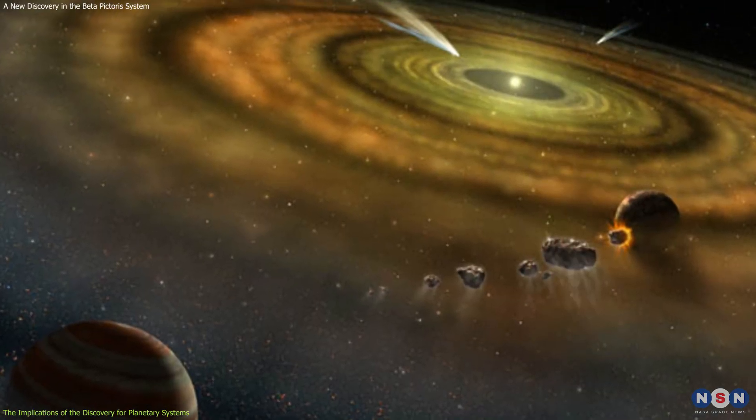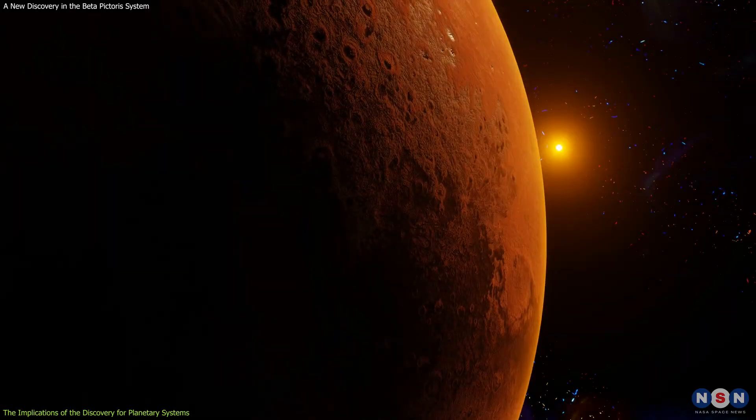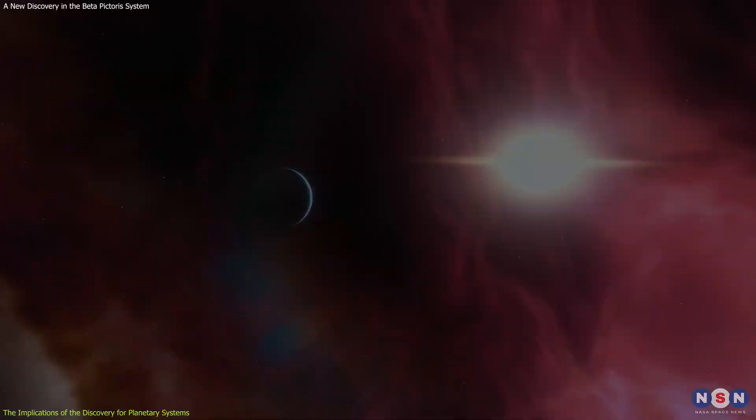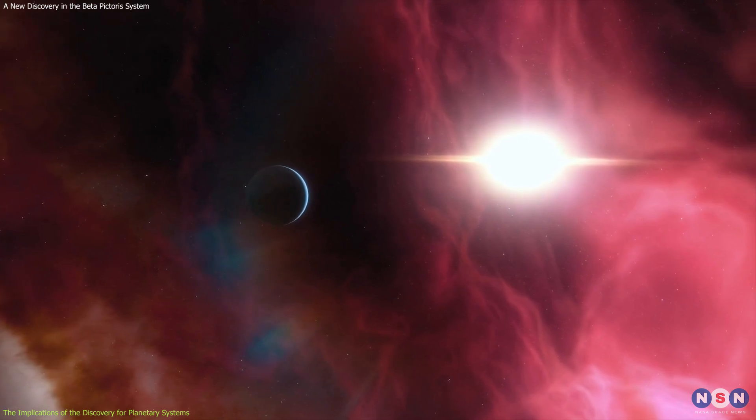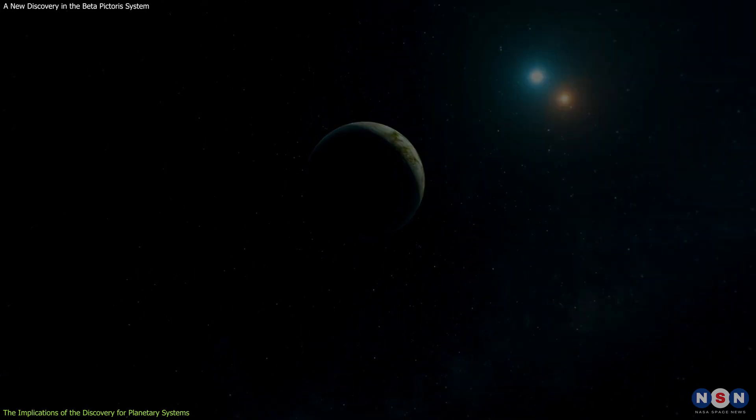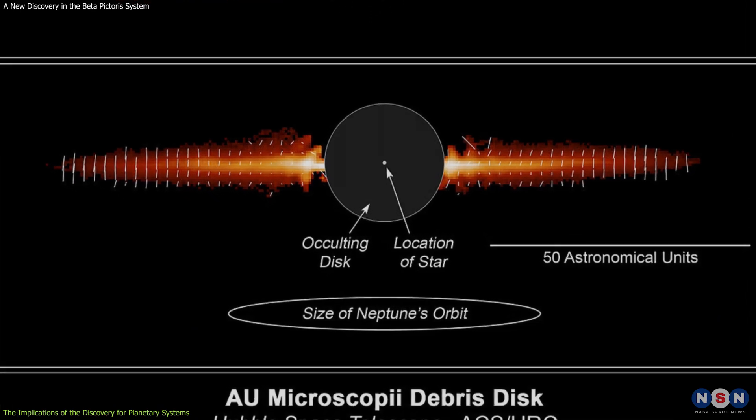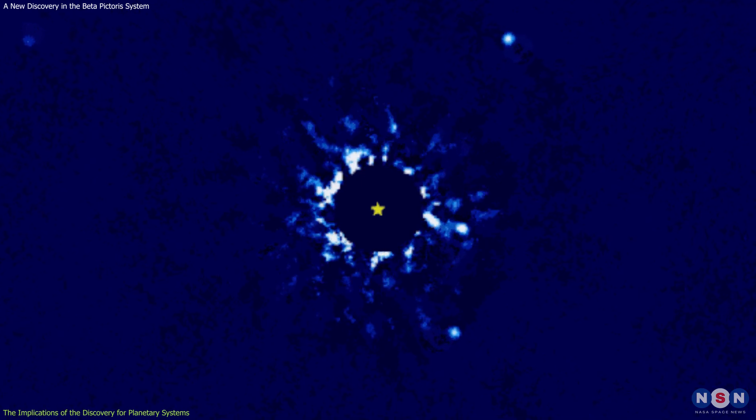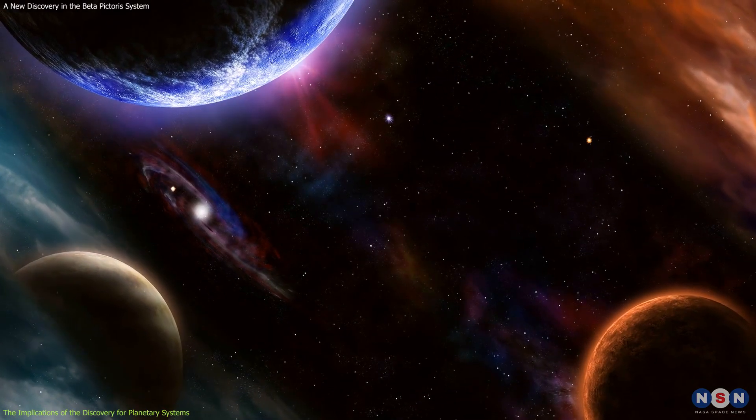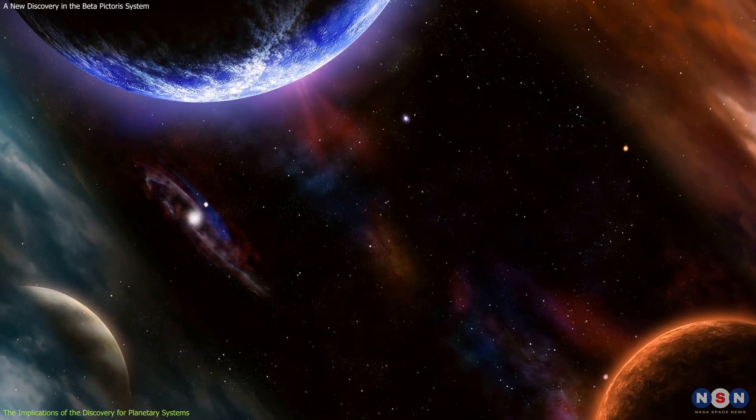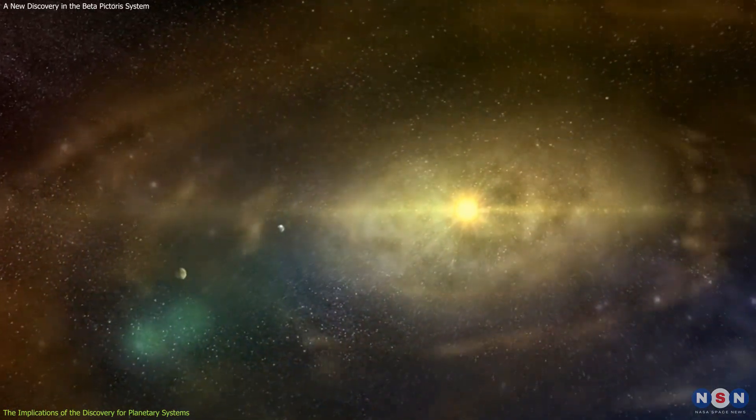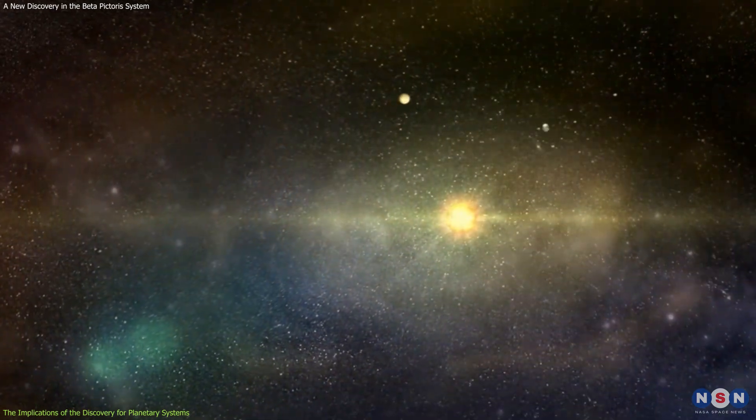This system is not the only one of its kind. There are many other young and nearby planetary systems that Webb can observe, and that may have similar or different features. Some of these systems are already known, such as AU Microscopii, Fomalhaut, and HR 8799, and some of them are yet to be discovered. By comparing and contrasting these systems, we can learn more about the processes and factors that shape the formation and development of planets and their environments.